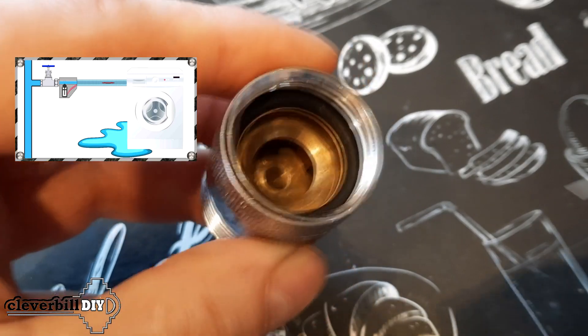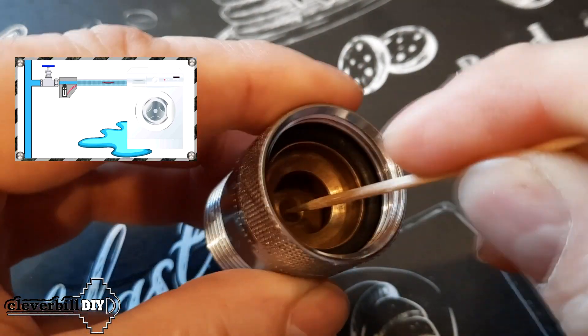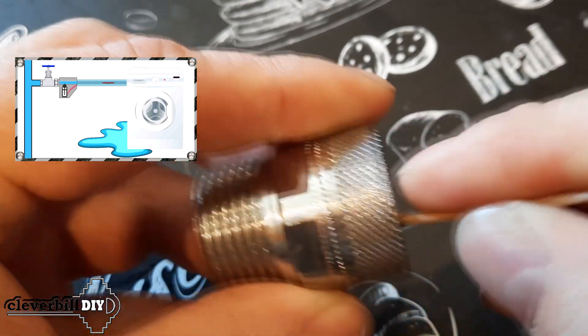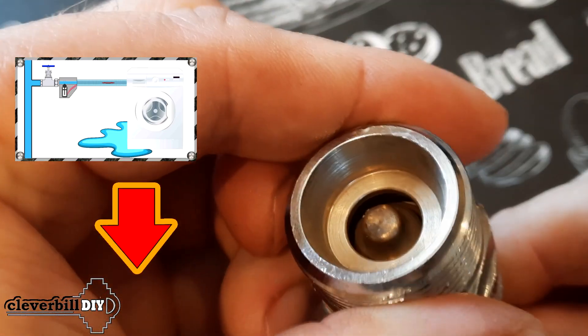You can watch a video about leakage protection options used by manufacturers of washing machines and dishwashers in my other video, the link to which will be in the description or in the attached commentary.